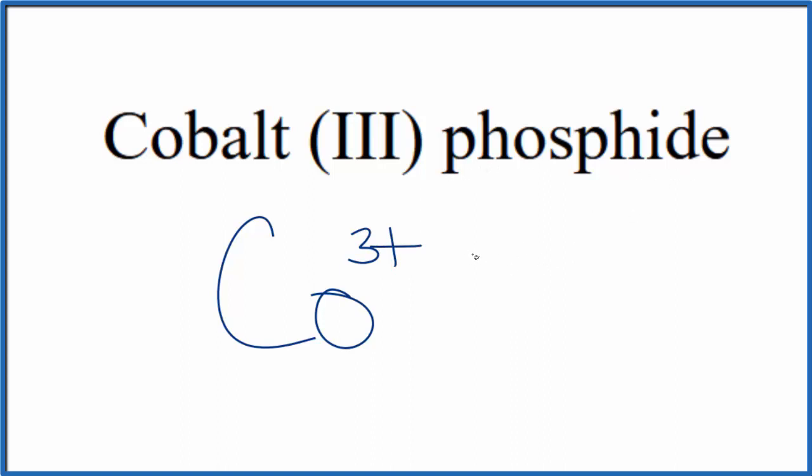For the phosphide, that's from phosphorus, so we're just going to write P. Cobalt(III), this is a transition metal. Phosphorus, that's a non-metal. So we need to make sure the charge is balanced on the cobalt and the phosphorus here.